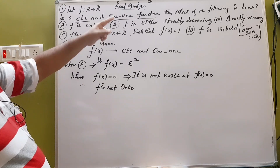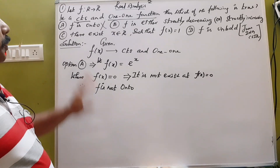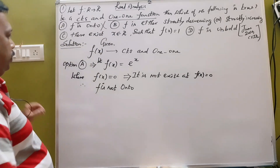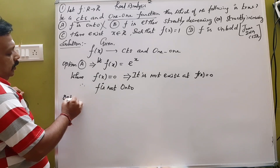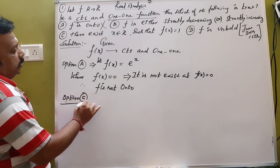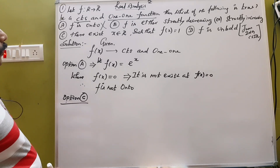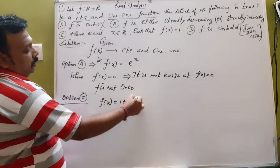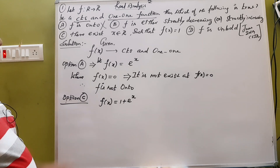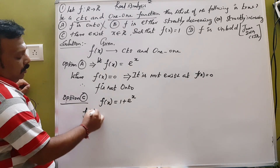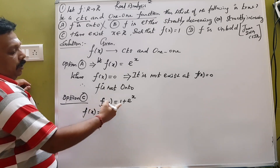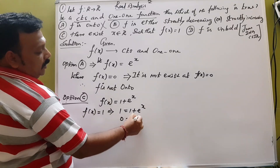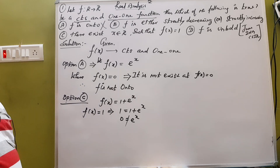So F is either strictly decreasing or strictly increasing. There is X to R or F(X) = 1. Option C. If F(X) = 1, we will find this one: F(X) = 1 + e^x. So if we find this one: 1 = 1 + e^x. Then 1 minus 1 = 0 = e^x. This condition is wrong.